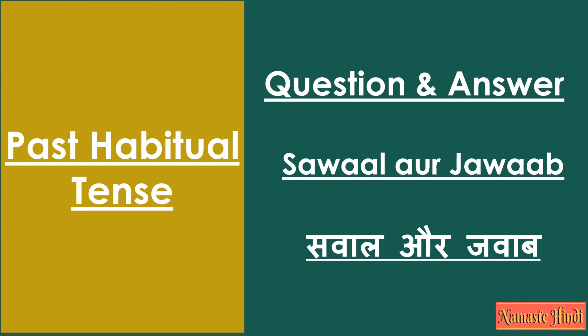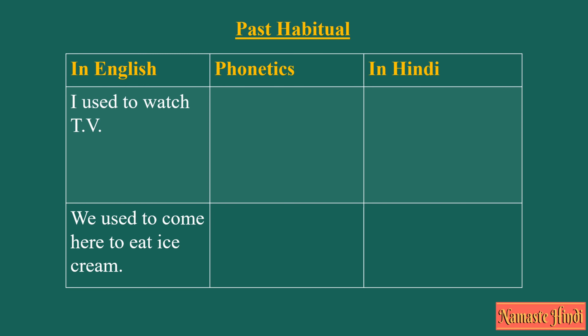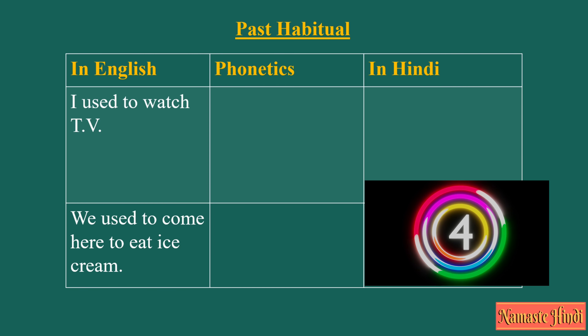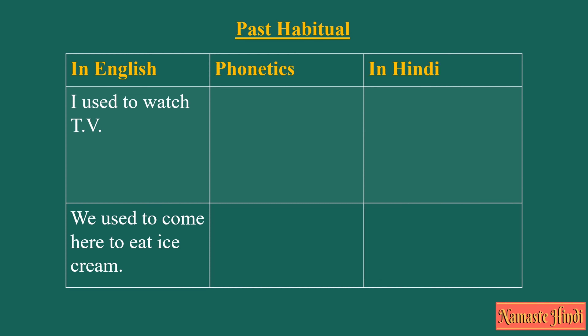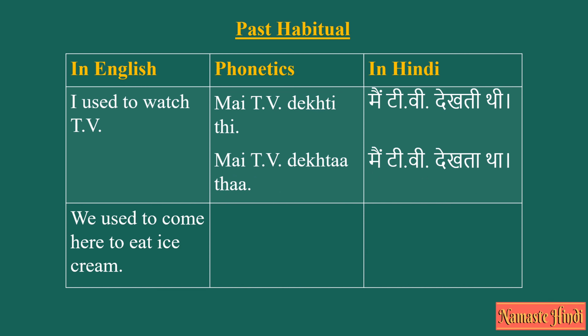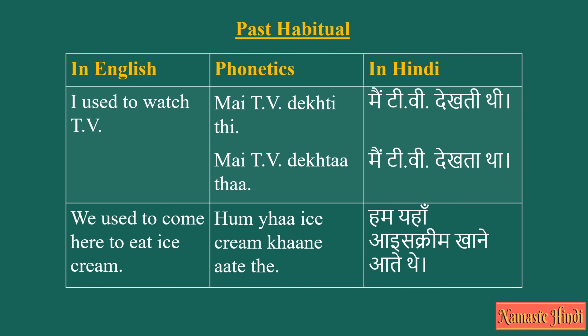Question and answer — Sawaal aur jawaab. Translate English sentences into Hindi. I used to watch TV — said by a female: Main TV dekhti thi. Said by a male: Main TV dekhta tha. We used to come here to eat ice cream — Hum yahaan ice cream khane aate the.